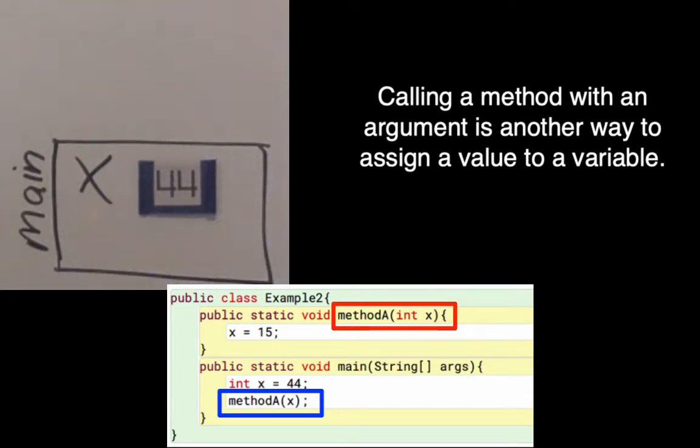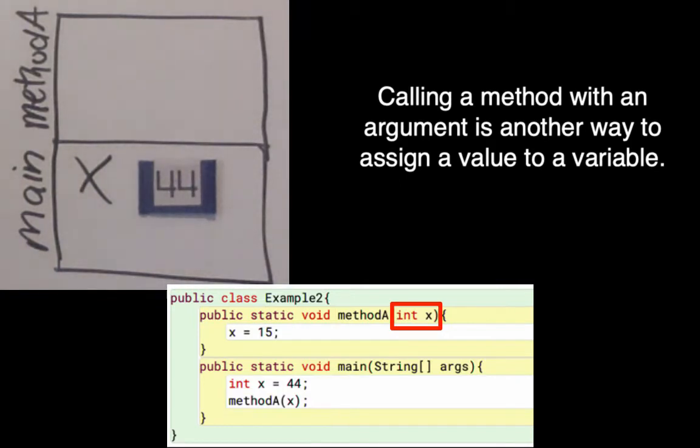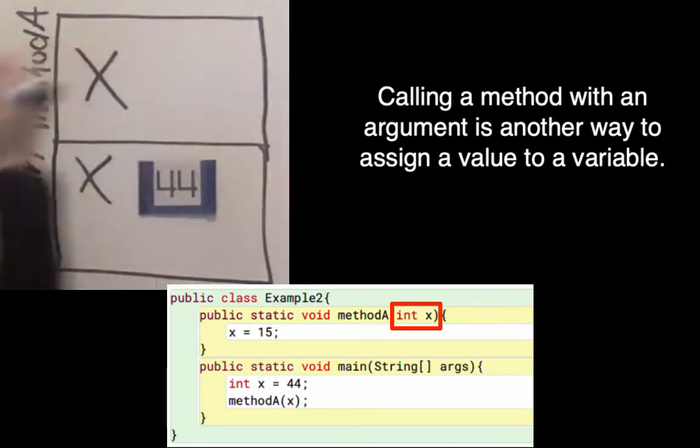I'll draw that right on top of my main method and I wrote the name of the method there on the side again. So I can see inside of methodA that it has a local variable named x, and it got that local variable name because of the parameter named x. So methodA has a local variable named x.